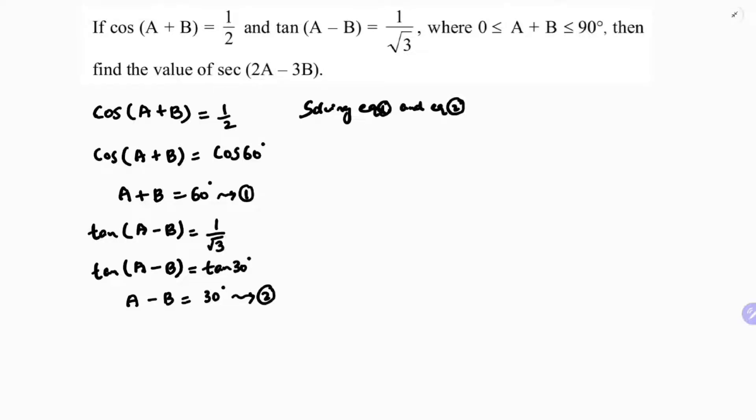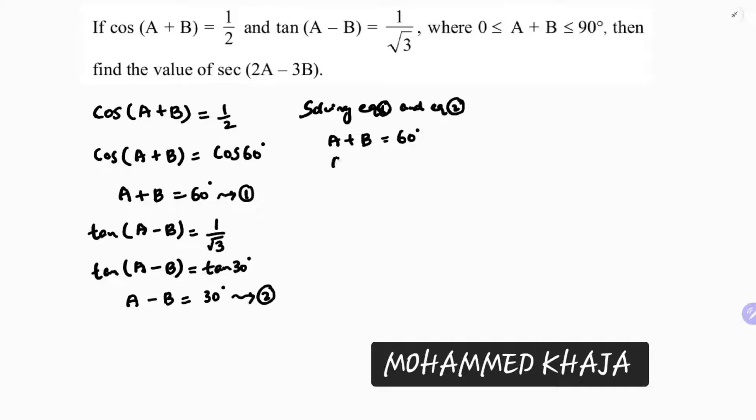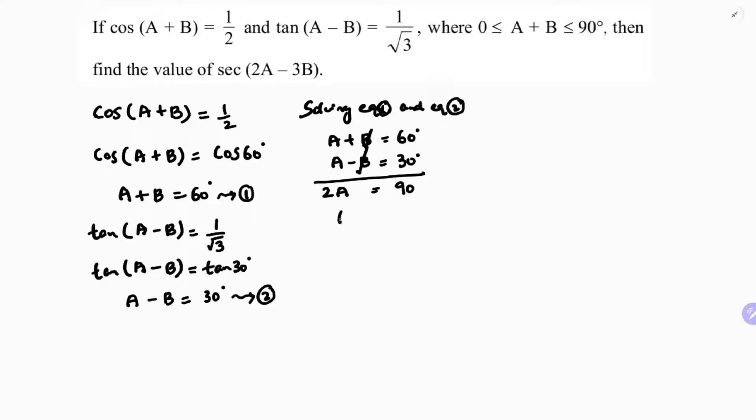Now A + B is 60°, A - B is 30°. I'll eliminate here; B and B will get cancelled. 2A is 90. I'm adding both, so A equals 90 degrees by 2, so A value is 45. The value of A is 45.